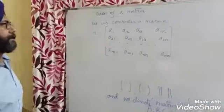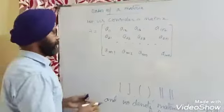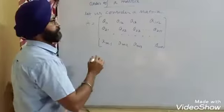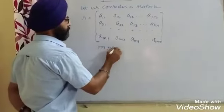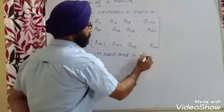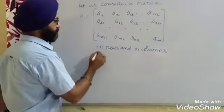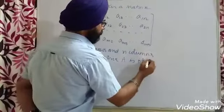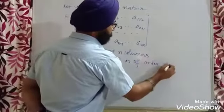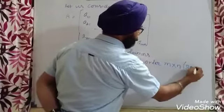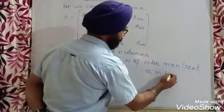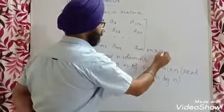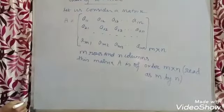We find here that there are M rows and N columns. So in this matrix, there are M rows and N columns. The order of this matrix — if it has M rows and N columns — is M by N. This is read as M by N, and that is the order of the matrix.